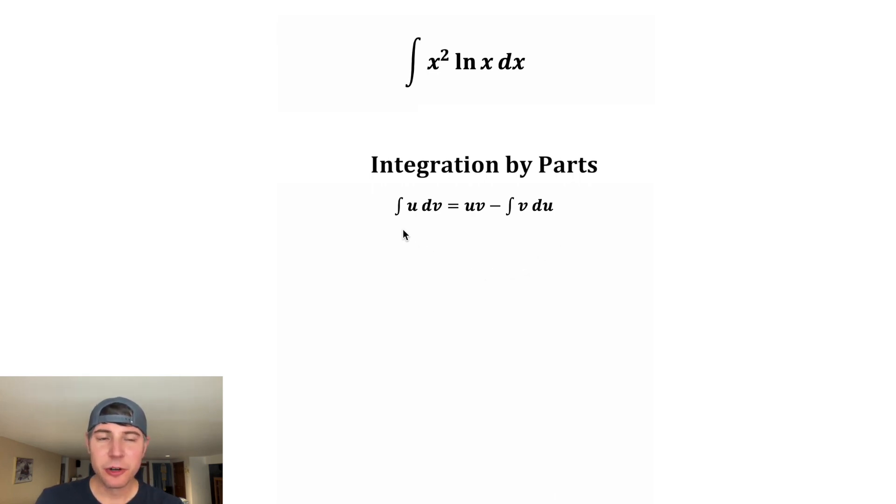The integral of u dv is equal to uv minus the integral of v du. So we need to find u, du, v, and dv. This stuff on the left side of the equal sign is our original integral, so we need to find a u and a dv somewhere inside here.